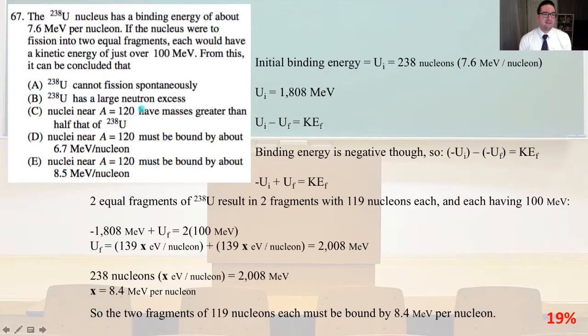67. The uranium-238 nucleus has a binding energy of about 7.6 MeV per nucleon. If the nucleus were to fission into two equal fragments, each would have a kinetic energy of just over 100 MeV. From this, it can be concluded that, so the initial binding energy Uᵢ equals 238 nucleons times (7.6 MeV per nucleon). And so Uᵢ is going to also equal 1808 MeV.